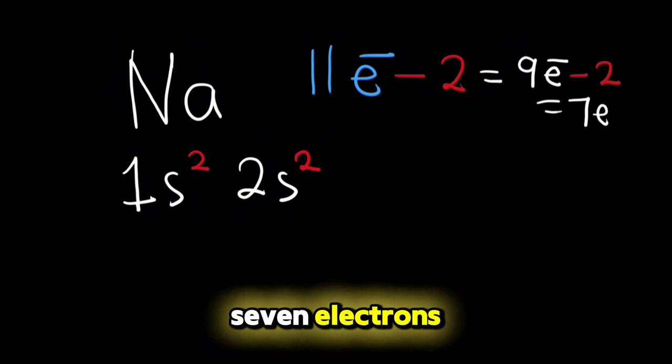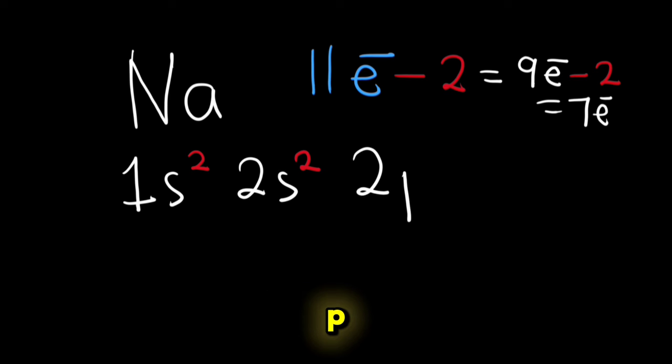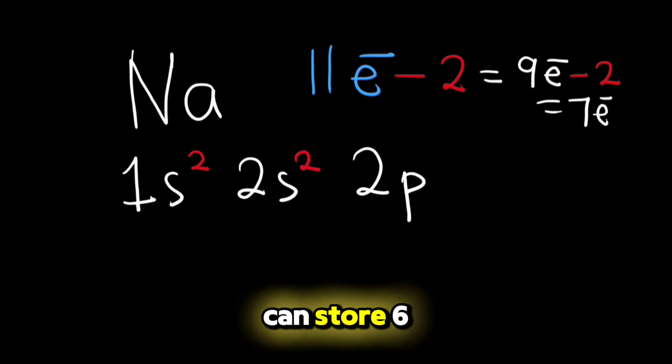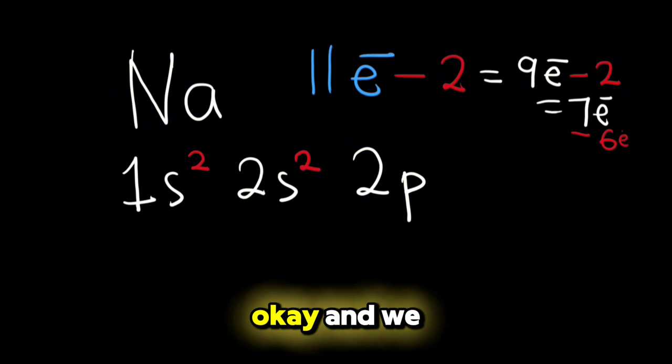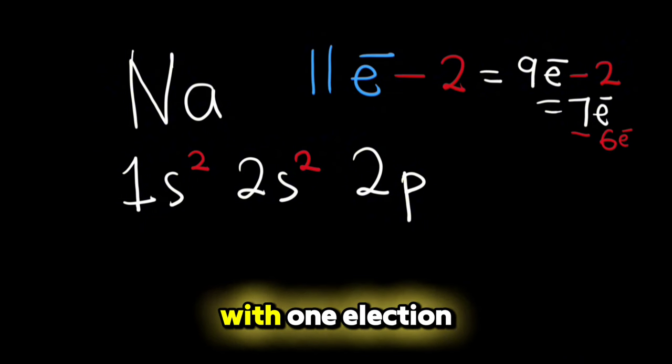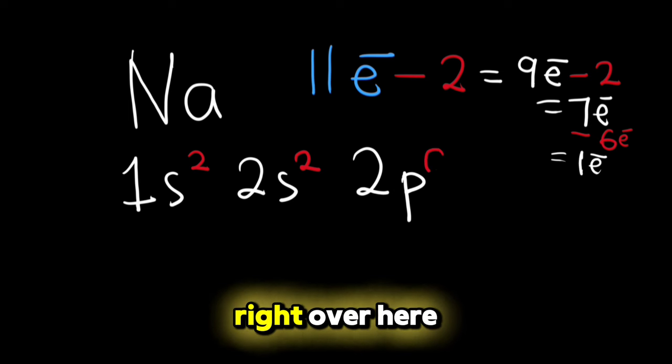Now what's next? Next is 2p. Now p can store six electrons, so we will subtract here six electrons and we will be left with one electron. And we will write this 6 right over here.